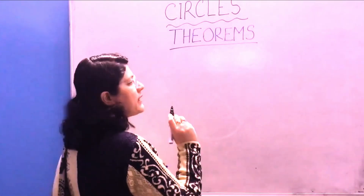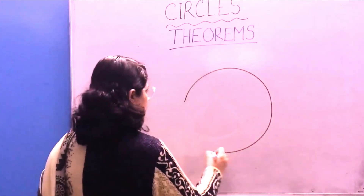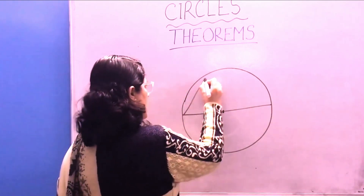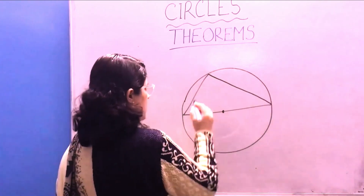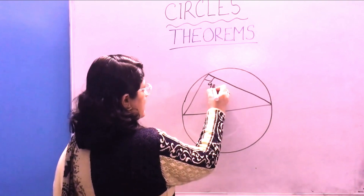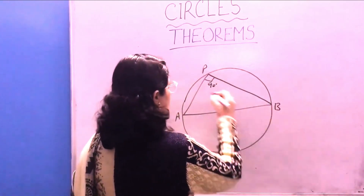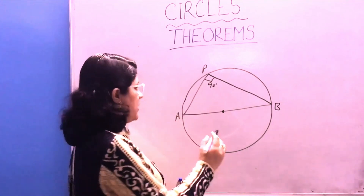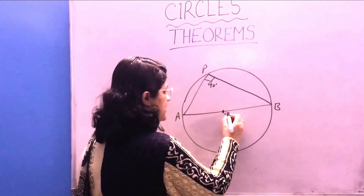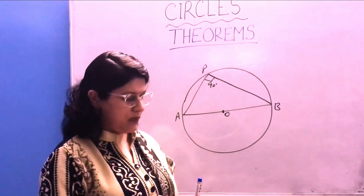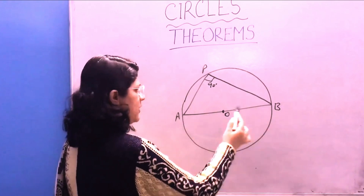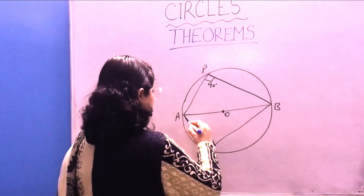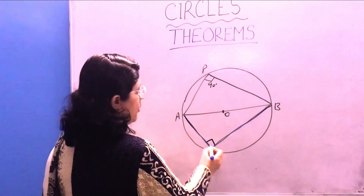The next theorem is: the angle in a semicircle is a right angle. To draw a semicircle, we draw a diameter of the circle passing through the center. The angle made by this diameter on the circumference — angle APB — should be 90 degrees. Always ensure before concluding this angle is 90 degrees that it is given that AB is the diameter and O is the center. The angle made by the diameter at any point on the remaining circumference is always 90 degrees.